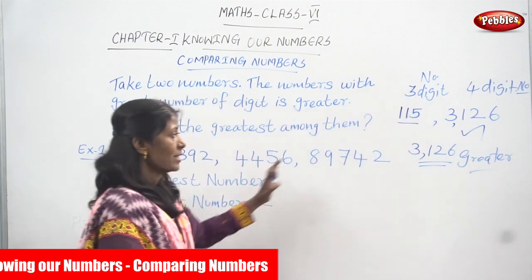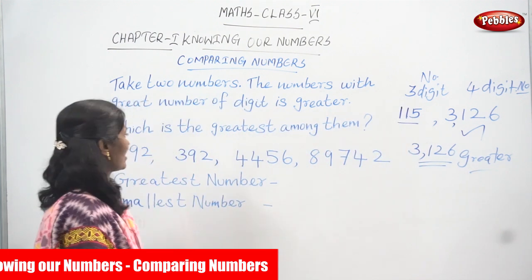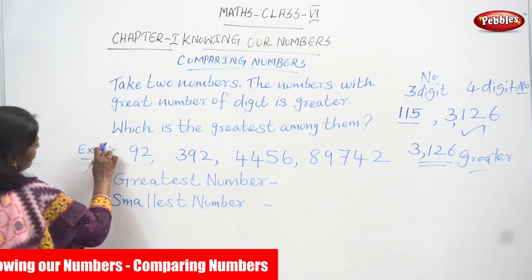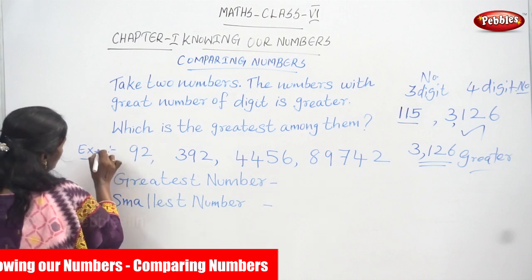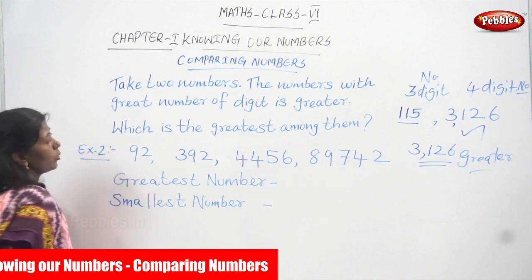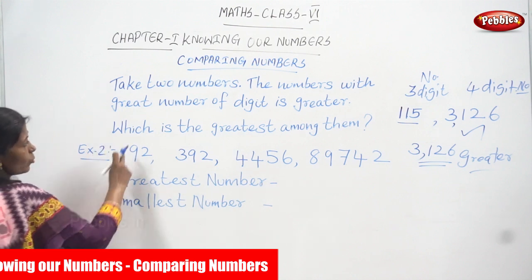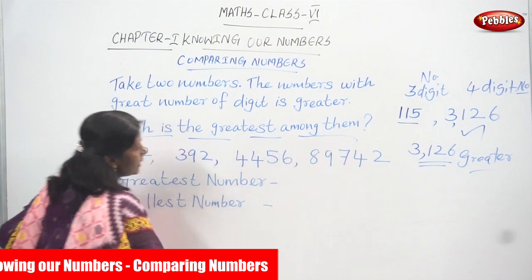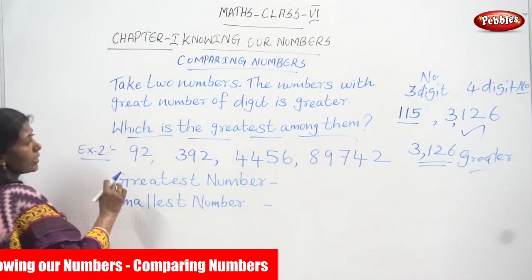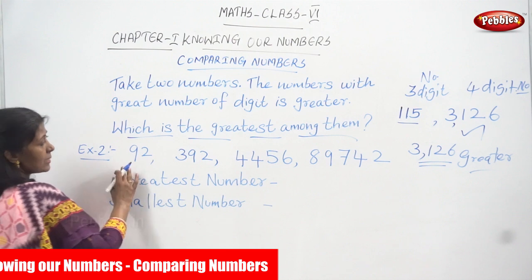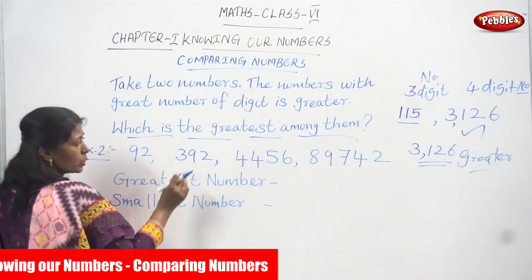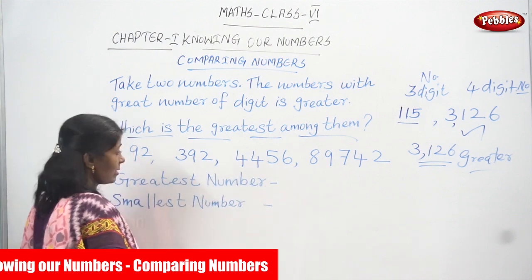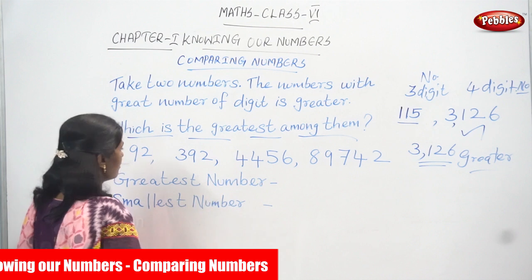Now, this is example two. Which is the greatest among them? Why do I say among them? Because there are not only two numbers — four numbers are given. I have written four numbers.